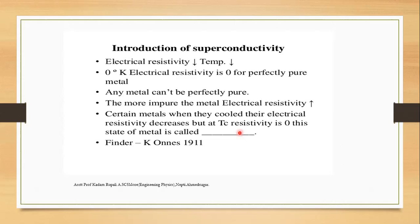But at Tc — which is called the critical temperature — the resistivity becomes zero. In that state, the metal is called a superconductor. Superconductivity was discovered by H.K. Onnes in 1911.